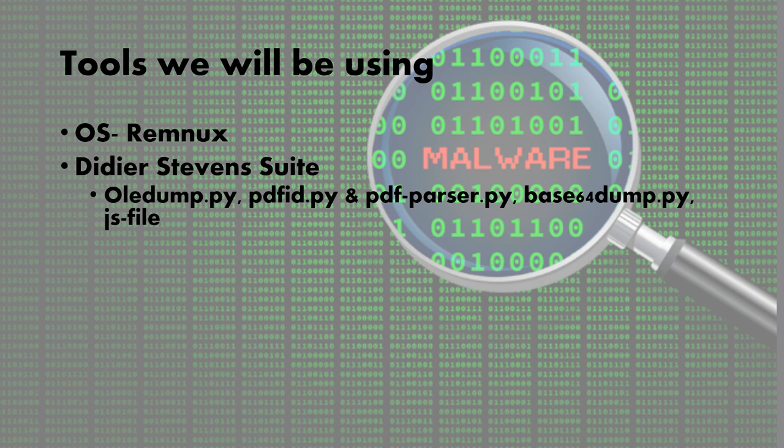We'll also use js-file — a modified SpiderMonkey version — which is used to run JavaScript outside of your browser. Both js-file and js-ascii are the same modified SpiderMonkey builds. We'll use these heavily for running malicious code to get output such as write.log and eval.log.